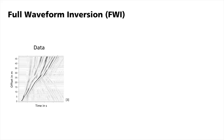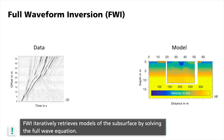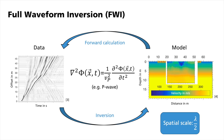FWI is an inversion method that accounts for the full seismic waveform. It iteratively retrieves models of the subsurface by solving the full wave equation and allows for mapping structures on spatial scales down to approximately half a seismic wavelength. FWI can be applied on a wide frequency band of seismic waves, which are discretized on a model grid and inverted using high-performance computers.